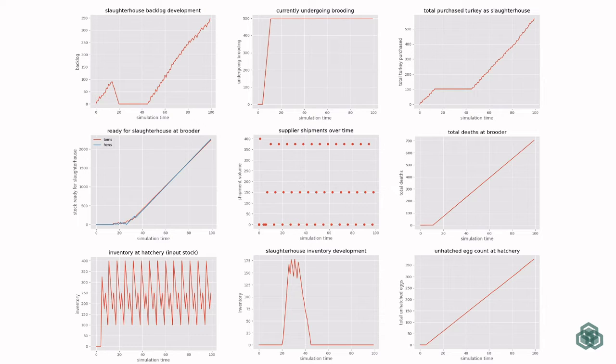For example, the backlog development of the slaughterhouse, the timeline of the actual egg shipments from the egg supplier to the hatchery, the amount of slaughter-ready Thompson hens at the farm coops, the inventory at the hatchery, the slaughterhouse inventory throughout simulation, and for example the unhatched egg count at the hatchery. Mortality is also included by the farm coops process. We can see here, for example, there is a constant mortality rate in this case, so we have a linearly increasing total amount of deaths at the brooding or at farm coops also.